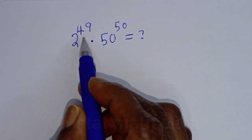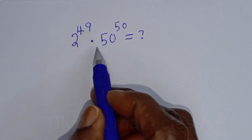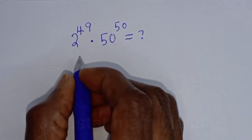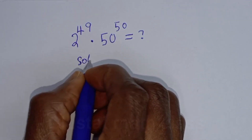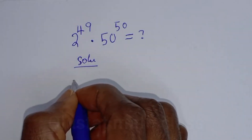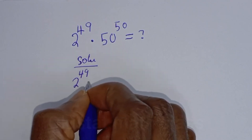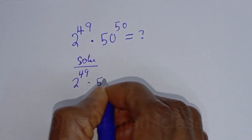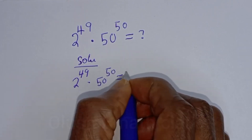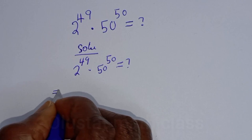Hello, how to simplify this nice math problem: 2 raised to power 49 multiplied by 50 raised to power 50 is equal to what? Solution: 2 raised to power 49 multiplied by 50 to the power of 50 equal to...